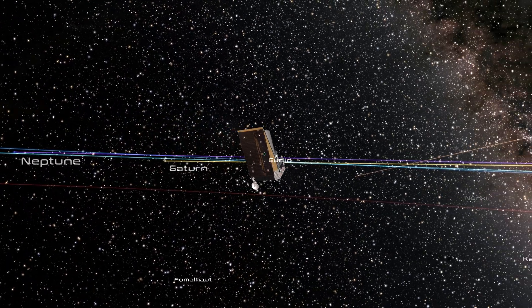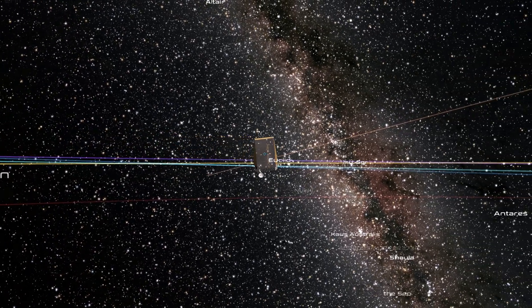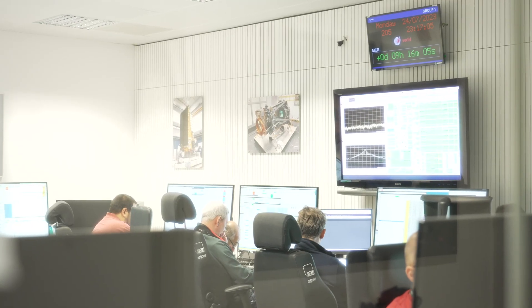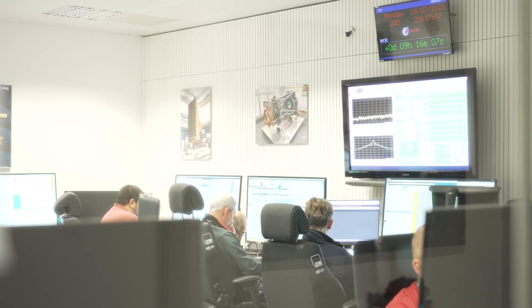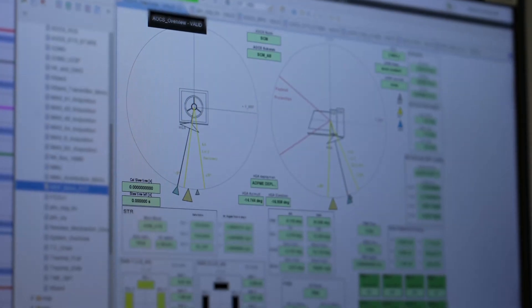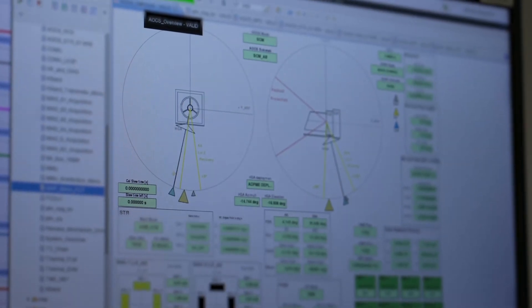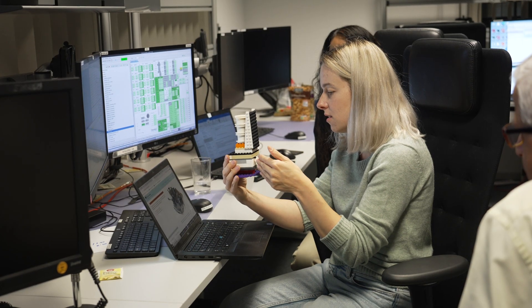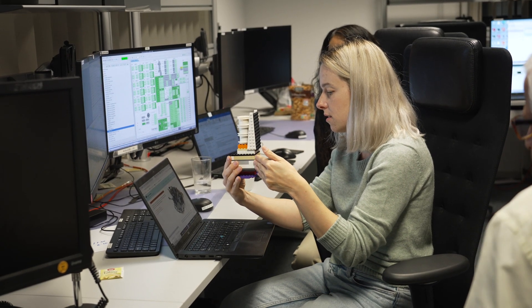During the first months of commissioning, Euclid scientists initiated a sequence of thorough evaluations on the spacecraft by activating the onboard scientific instruments, testing the guidance system, monitoring telemetry, and conducting a series of diagnostic checks to ensure robust performance.